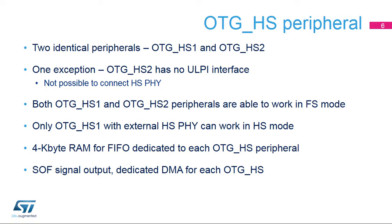The STM32H7 microcontroller embeds two instances of a USB-HS peripheral: OTG-HS1 and OTG-HS2. Both support full-speed communication and OTG mode, but only the OTG-HS1 peripheral supports high-speed communication through an external HSPHY thanks to its ULPI interface.